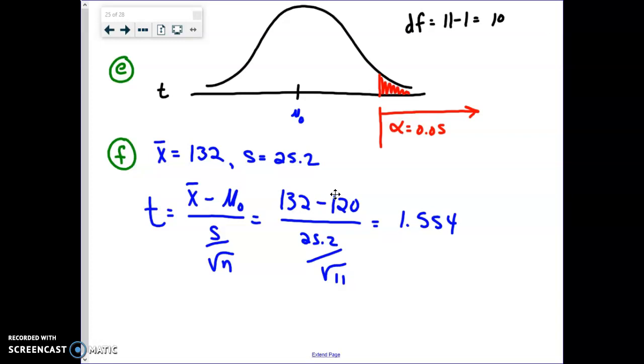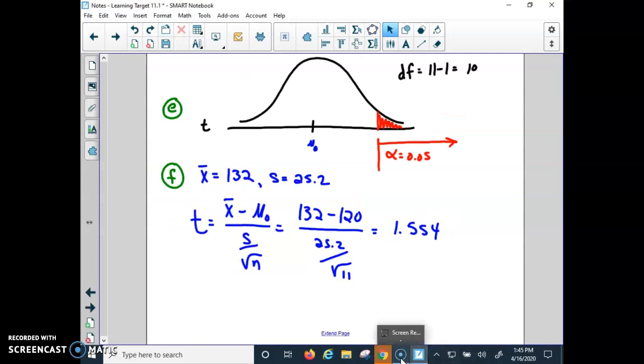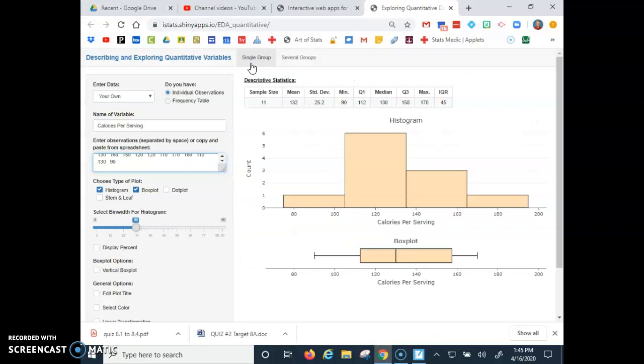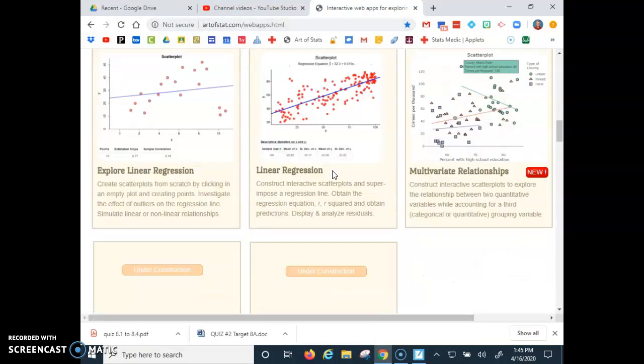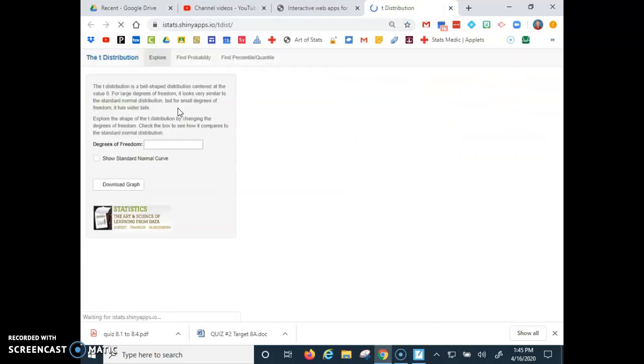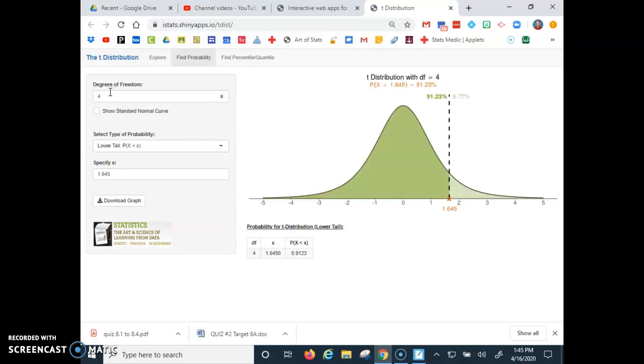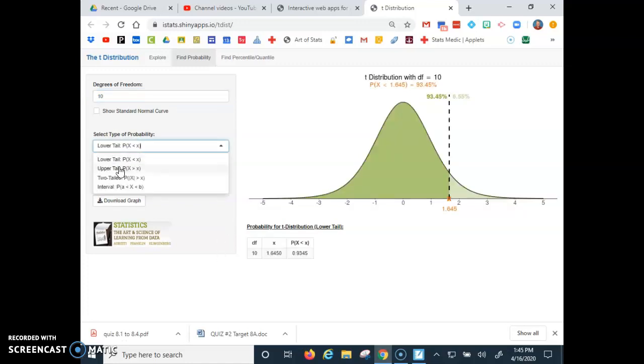Where is that on our graph? We got to calculate our p-value. I'm going to use the test statistic of 1.554 and I'm going to go back to my stat app. I'm going to go down to a t-distribution. I'm going to go to find probability because we want to find a p-value, and we have 10 degrees of freedom. This is a right tail or upper tail test, and I'm going to type in 1.554.